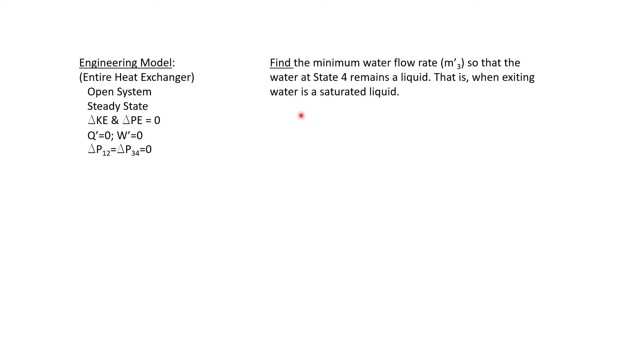And what we're really being asked to do is to find the minimum water flow rate, and that'll be ṁ₃ of the water, so that the water at state four remains a liquid. So that is when it's exiting, it's a saturated liquid and it's not a mixture.